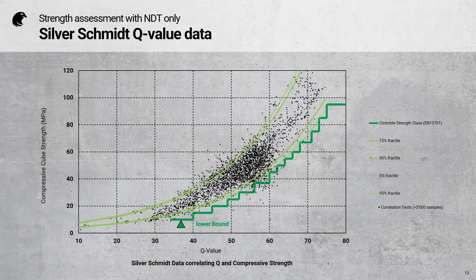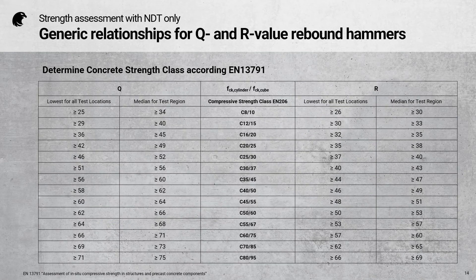Here you can see the data that was made available by PROCEQ to the standards bodies for making the Q-value generic relationship. This data was collected from independent validation tests around the world — primarily in Germany, China, and Japan. Here you can see the two generic relationships side-by-side.